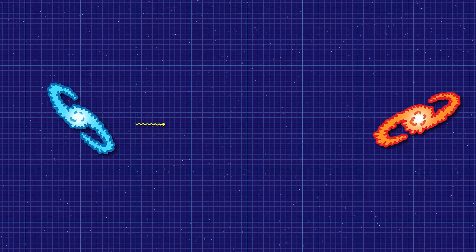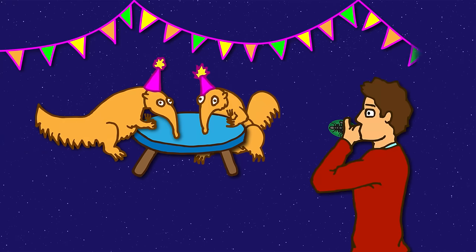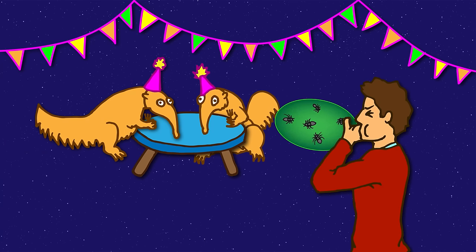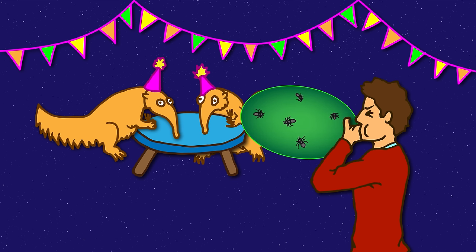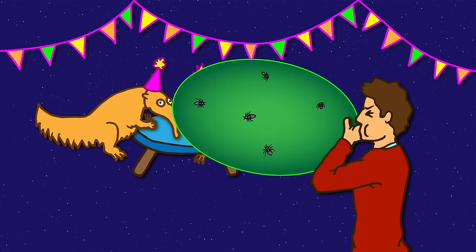To get your head around this bizarre situation, here's a couple of popular analogies. Imagine I'm having a birthday party for anteaters and I'm blowing up a balloon covered in ants. As the balloon inflates, the ants get further away from each other, even if they're standing still. The ants are like the galaxies and the balloon the expanding space.